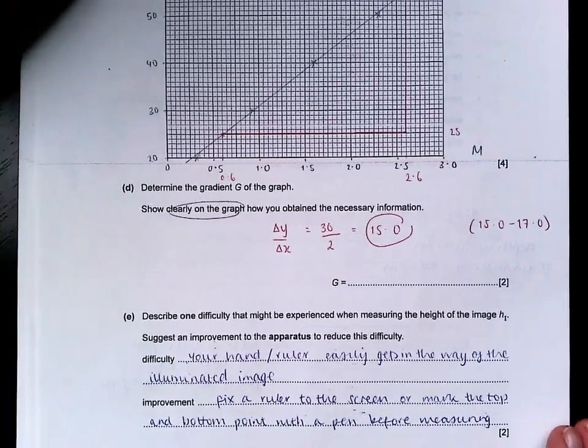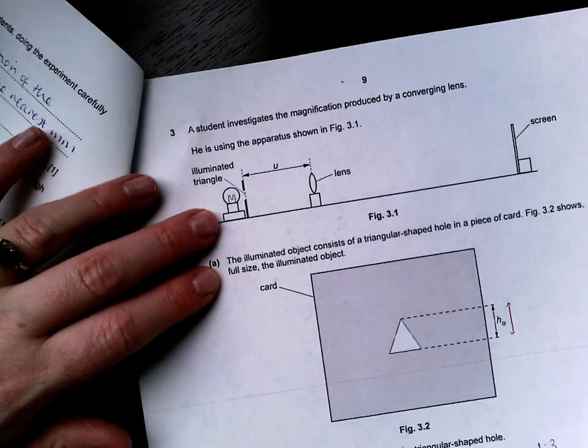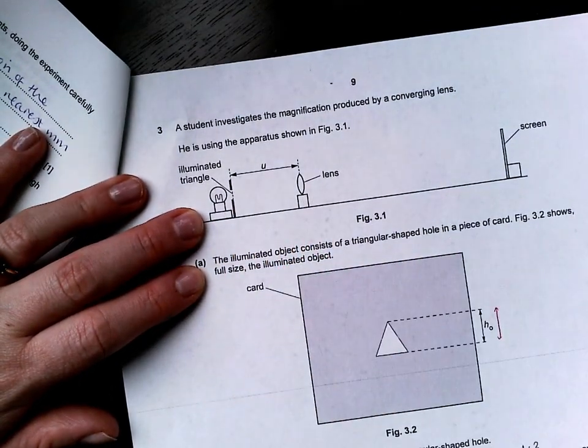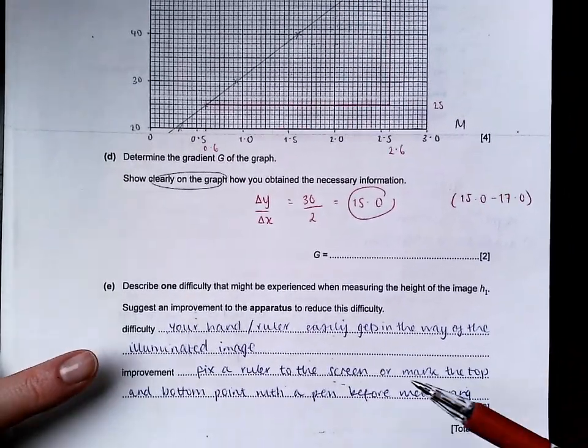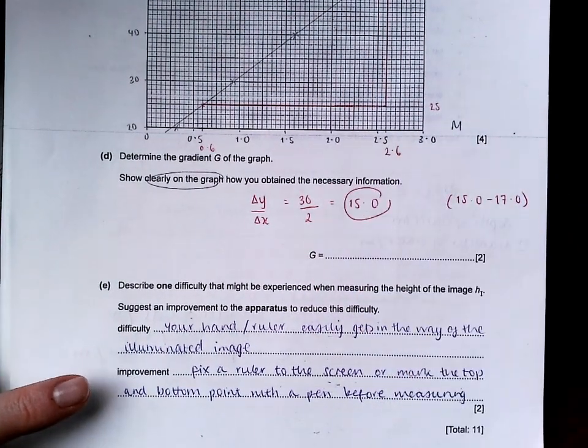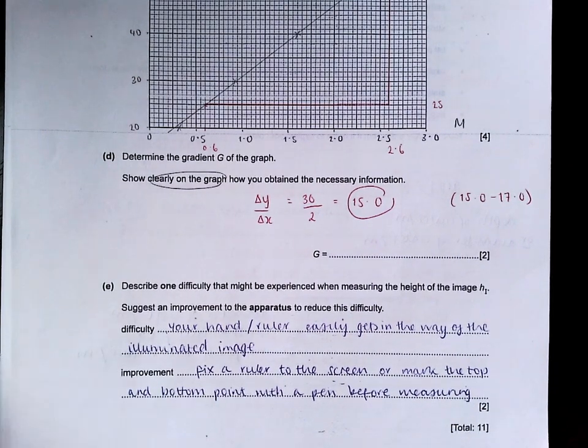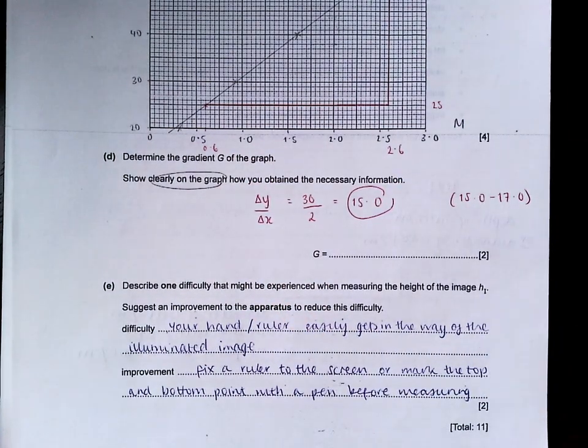In E, describe one difficulty that might be experienced when measuring the height of the image HI. When we got the lenses out and we got the candles and we were trying to focus an image, some of you wrote down, oh well it's really wobbly and it's hard to keep it still. But you can't use that in this one because it's very clearly all mounted and resting on a table. Suggest an improvement to the apparatus. When we measure the image, which is light, if we then put our hand in front of it, it skews the image. The improvement there then is to fix a ruler to the screen already so that your hand isn't getting in the way.